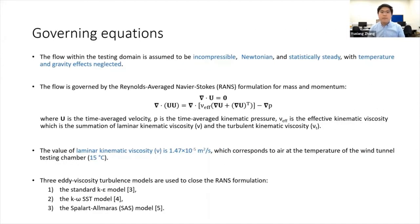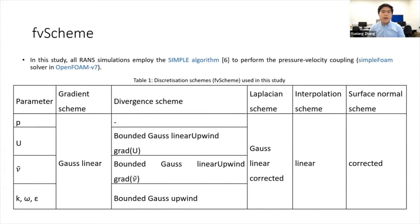We're assuming the flow is incompressible, Newtonian, and statistically steady, with temperature and gravity effects neglected. So it's governed by the steady-state incompressible form of the RANS formulation. To close the equations, we used three turbulence closure models: the standard K-Epsilon model, the K-Omega SST model, and the Spalart-Allmaras model. All RANS simulations employed the SIMPLE algorithm to perform the pressure-velocity coupling, using OpenFOAM version 7.